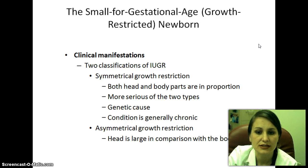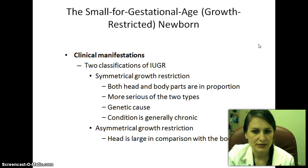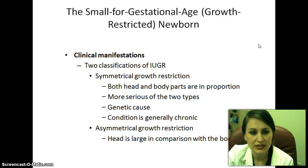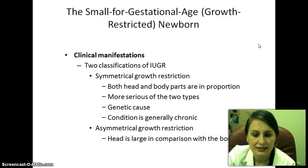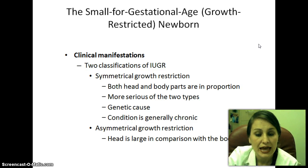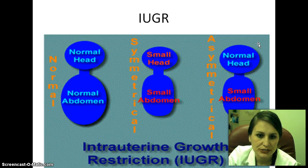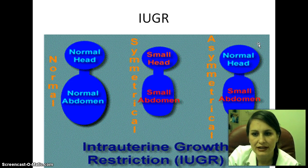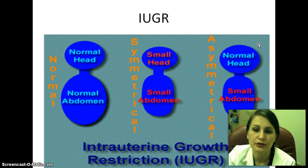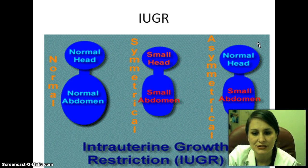Clinical manifestations of IUGR are either symmetrical growth restriction — where everything is proportional including both head and body parts — which is more serious and often has a genetic cause, or asymmetrical growth restriction, where the head is large in comparison to the body. On the chart you can see a normal baby, a symmetrical IUGR baby with small head and small abdomen, and an asymmetrical baby with a normal-size head but small abdomen.